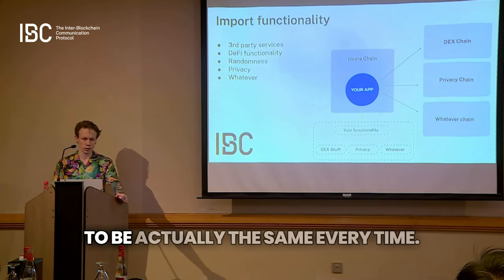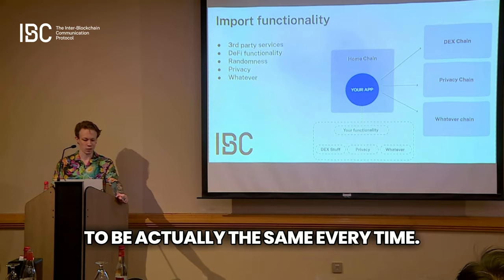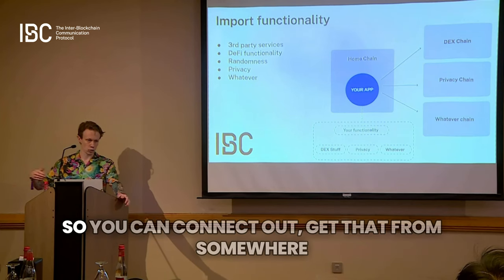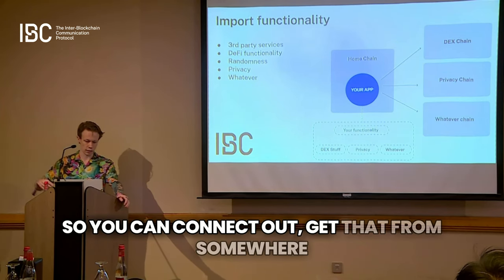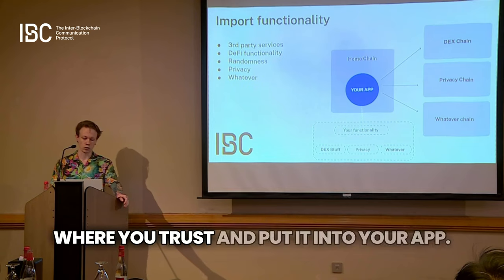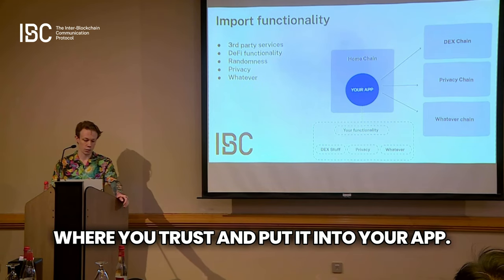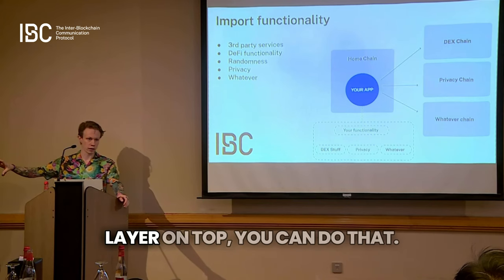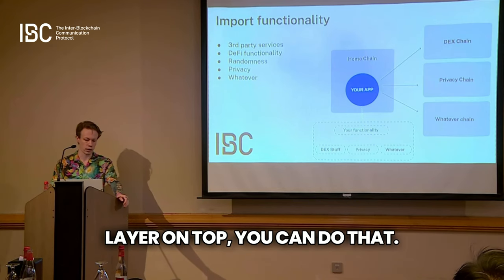Randomness is a difficult problem in blockchain because you need things to be actually the same every time. But some chains have solved that, so you can connect out, get randomness from somewhere you trust, and put it into your app. If you need some sort of privacy layer on top, you can do that.